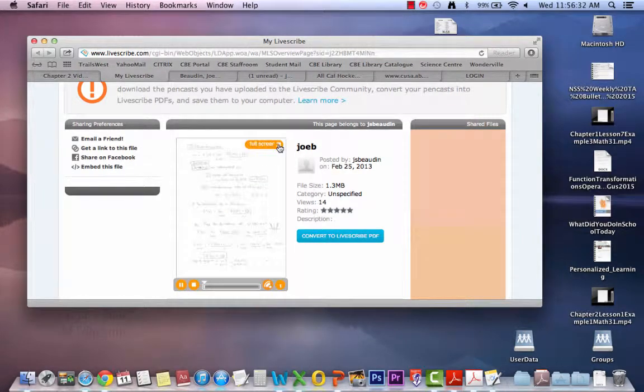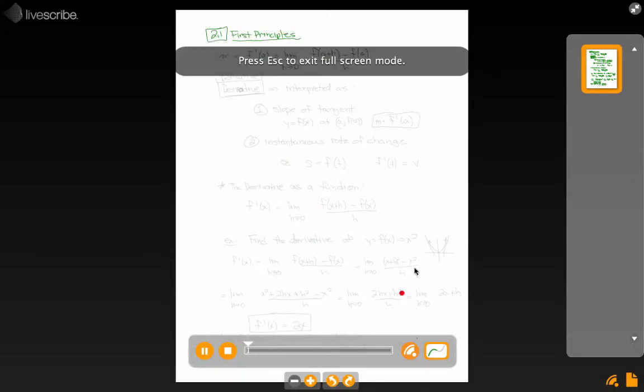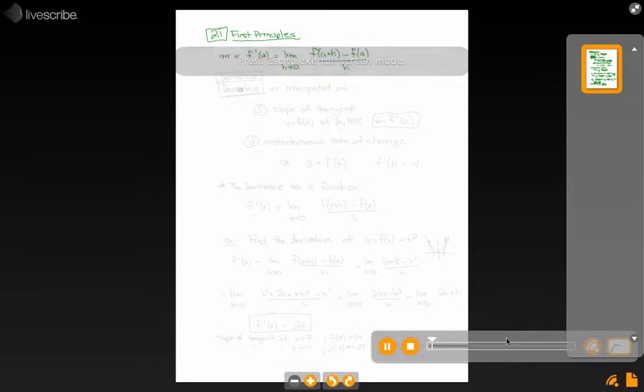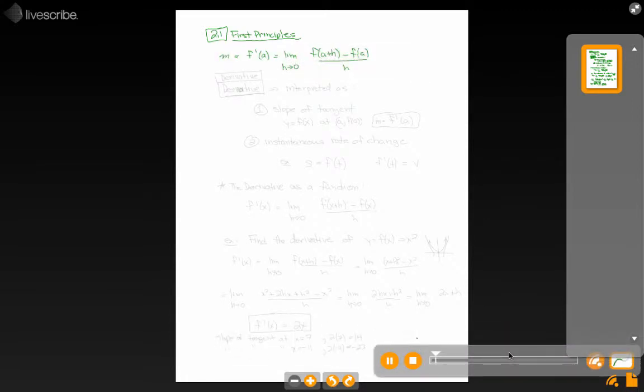This comes out of section 2.1, first principles. Along the lines in chapter 1, we found this expression that the slope equals the limit as h goes to 0 of f of a plus h minus f of a over h. I've introduced this new notation here of f prime. F prime is another notation for calling it the first derivative.